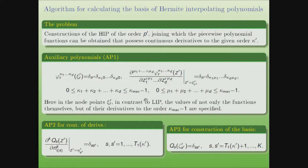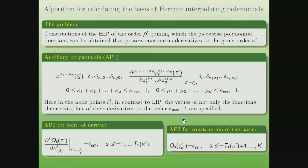In contrast to the one-dimensional case, these conditions do not form the basis of interpolation polynomials. It is needed to add two types of conditions. The second condition is needed for construction of the derivatives, and the third type of conditions is needed for construction of the basis of interpolation Hermite polynomials.